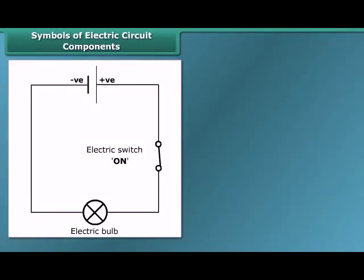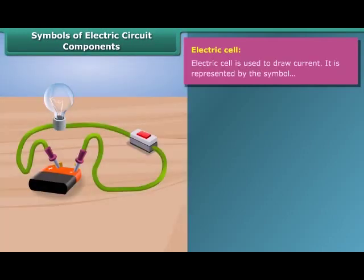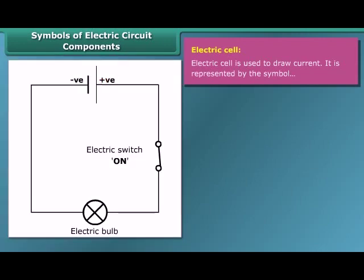An electric cell is a simple device used to generate electricity. Electricity is produced by chemical reaction. It has a positive terminal and a negative terminal. In the symbol of the electric cell, the longer line represents the positive terminal, and the thicker, shorter line represents the negative terminal.